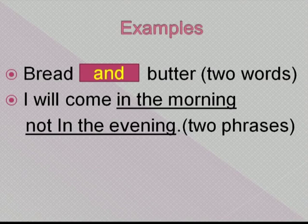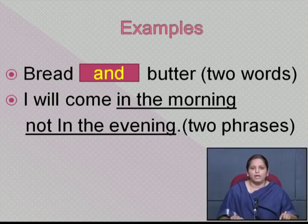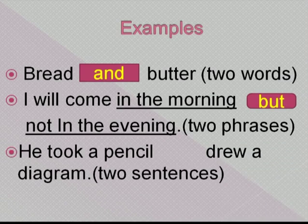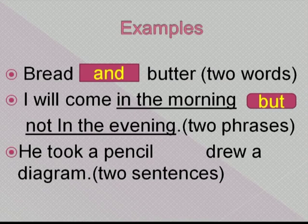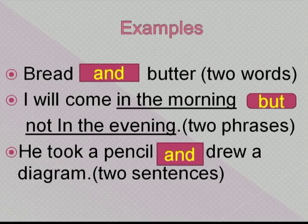In the second example, 'I will come in the morning, not in the evening' — these two phrases are connected with the connector 'but'. In the third example, 'he took a pencil, drew a diagram' — these two sentences are joined with the connector 'and', expressing both ideas in a single sentence.